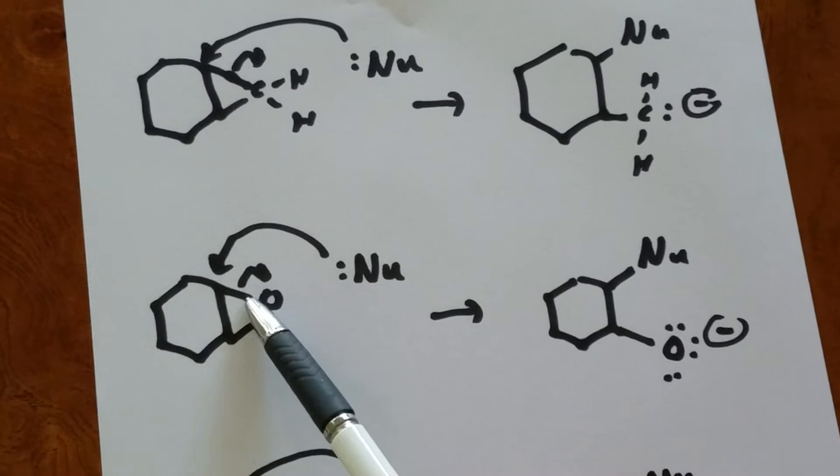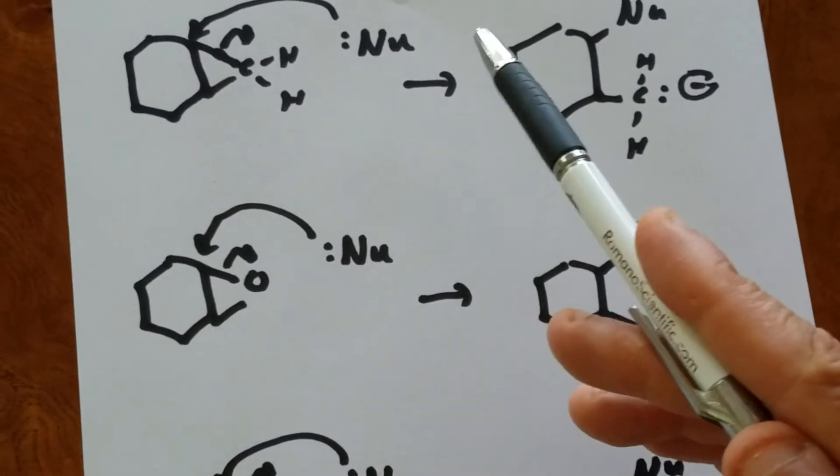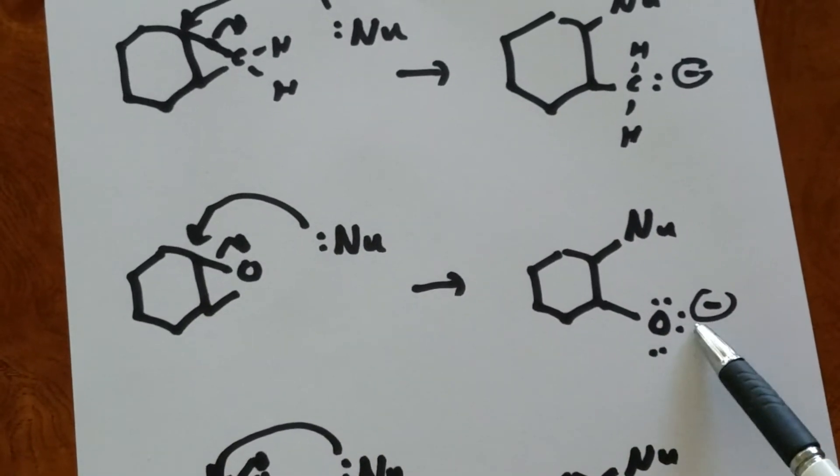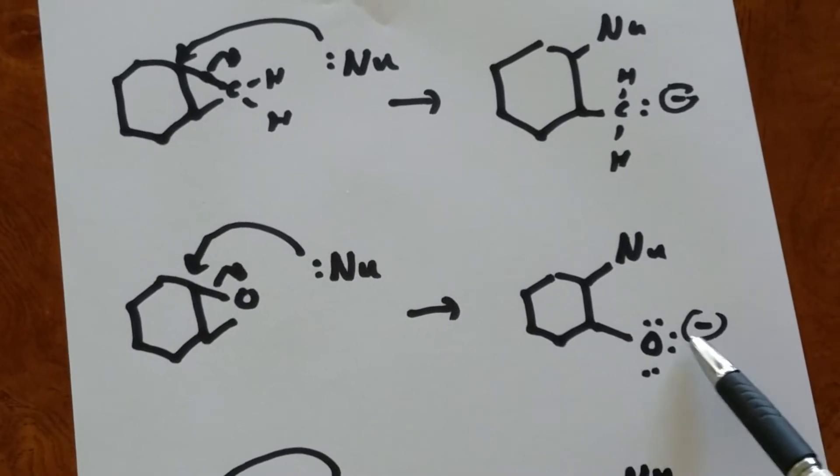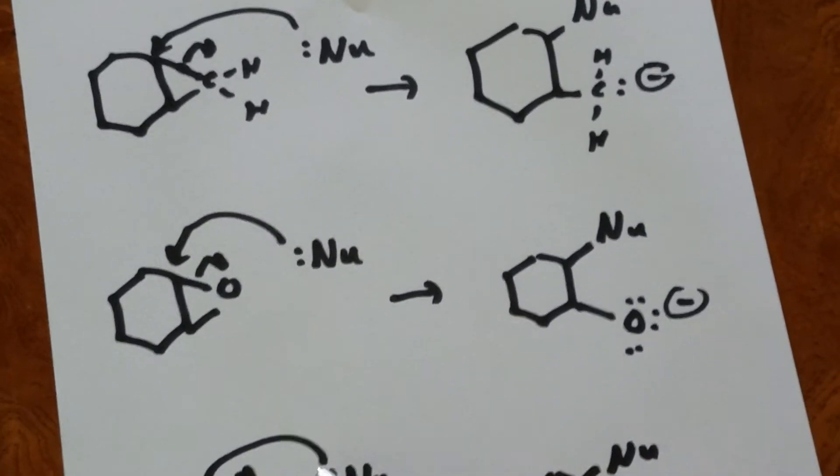Here, the nucleophile is attacking. The ring opens up to relieve the strain. And again, it opens up and you can think of this as leaving as an O minus.